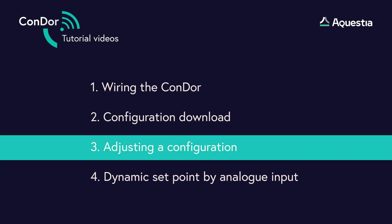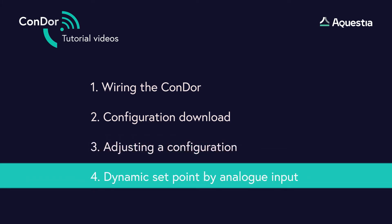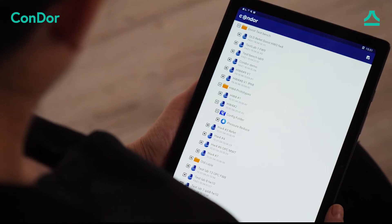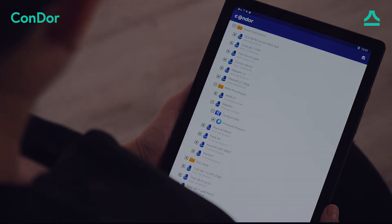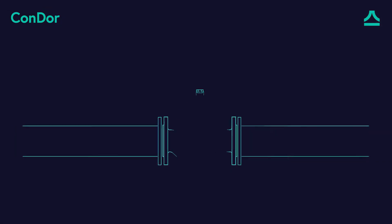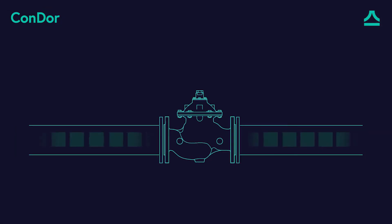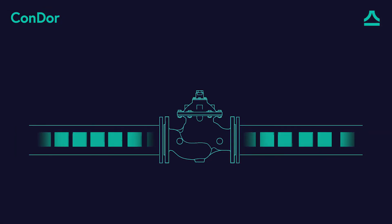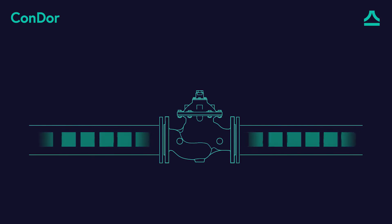In the previous tutorial number 3, we learned to use an existing configuration from the Condor shared configuration folder. In this video, we will learn to customize a slightly more complex but prevalent hydraulic function: pressure regulation in relation to flow. We will regulate the pressure according to the demand, in other words, according to the flow. Let's begin.